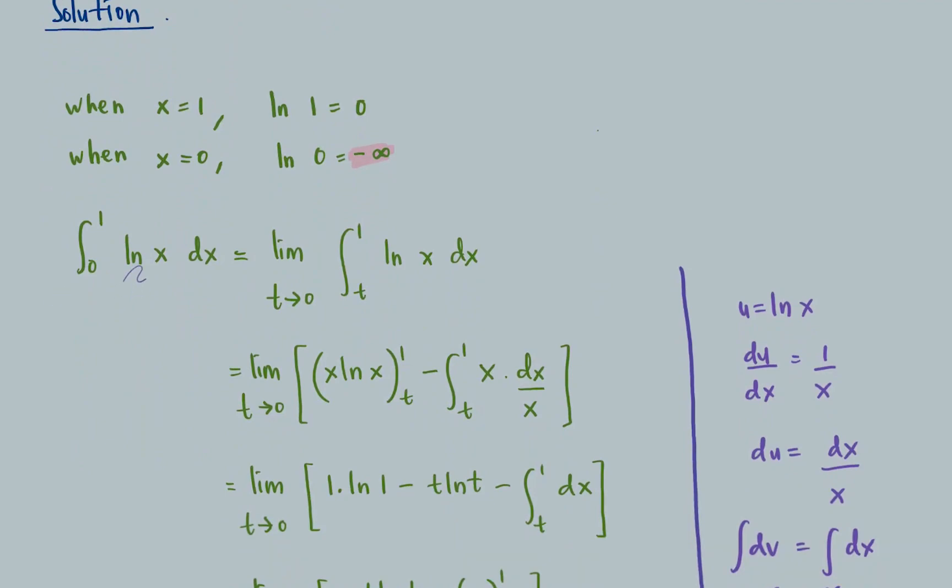Integrate ln x with respect to x from 0 to 1 is equal to limit t approaches 0, integrate from t to 1 ln x with respect to x, which means here since this function ln x is